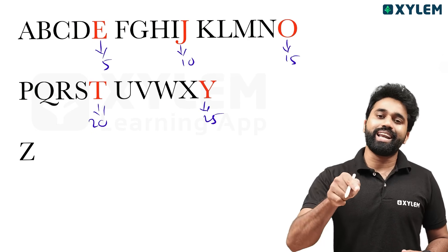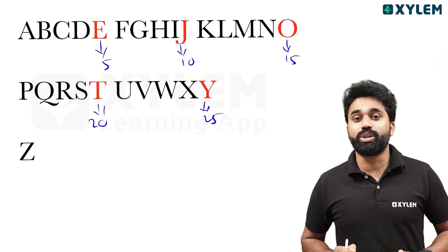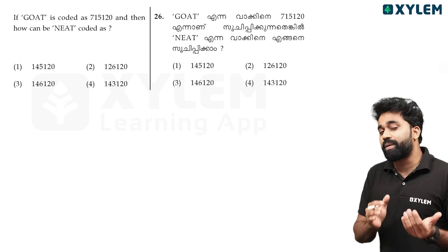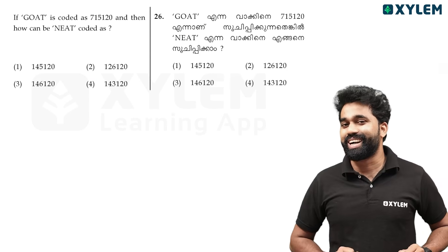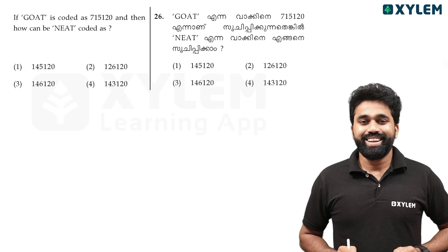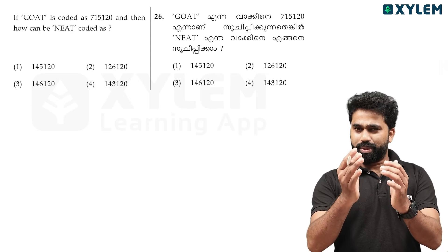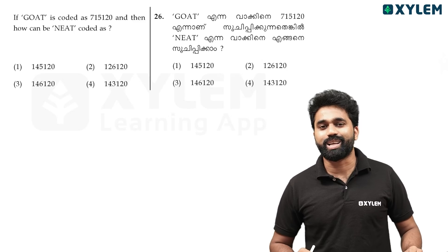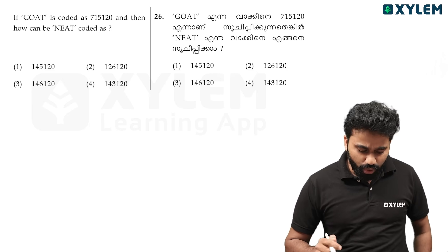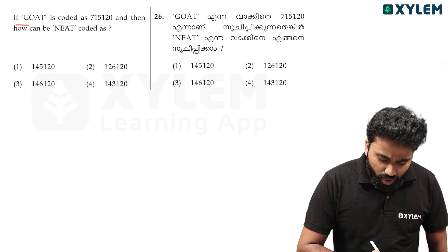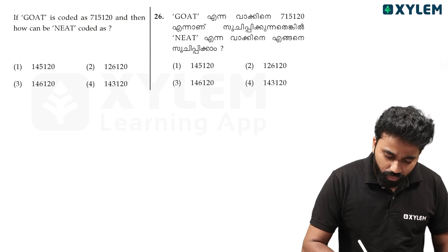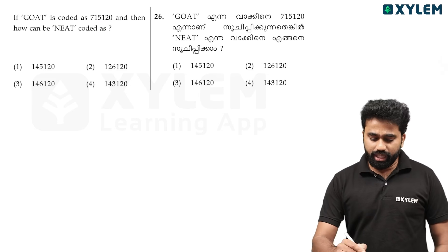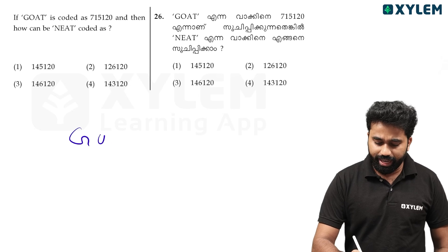How do you think about this position? I'm going to explain a simple question — you can tell the exam question. I'm going to tell you. If you think about this question: if GOAT is coded as 7, 15, 1, 20, GOAT is the word — G, O, A, T.